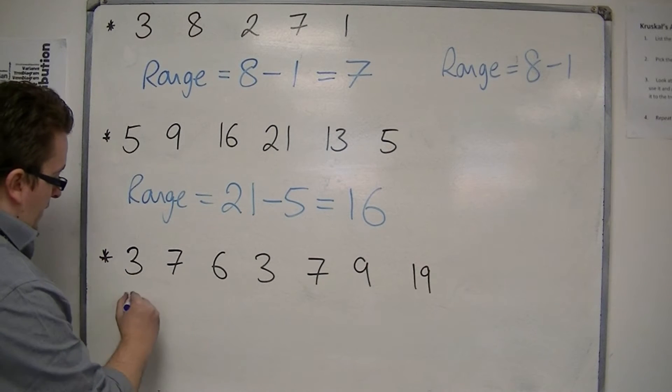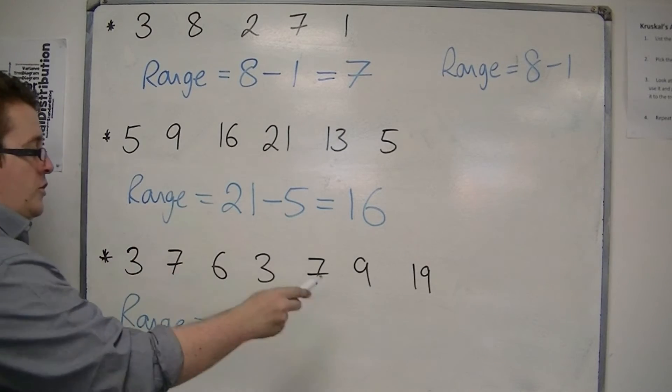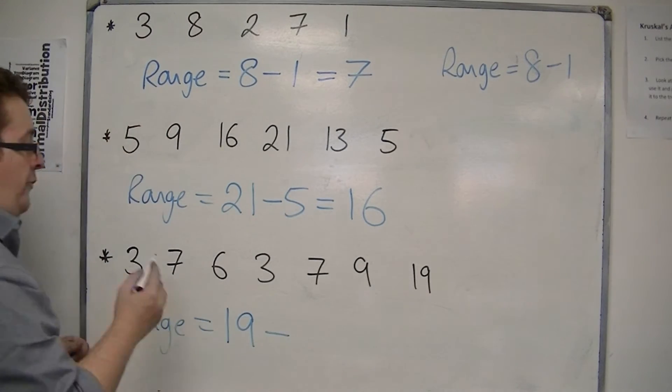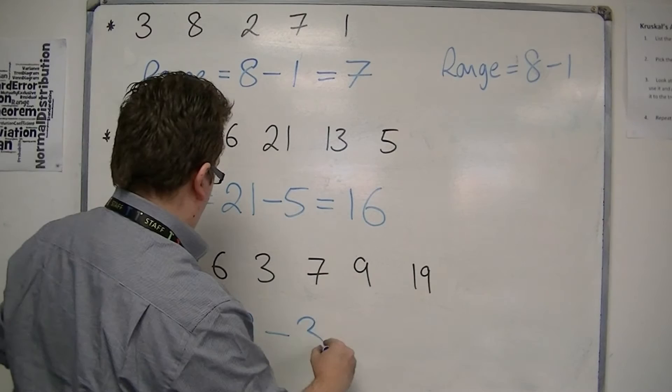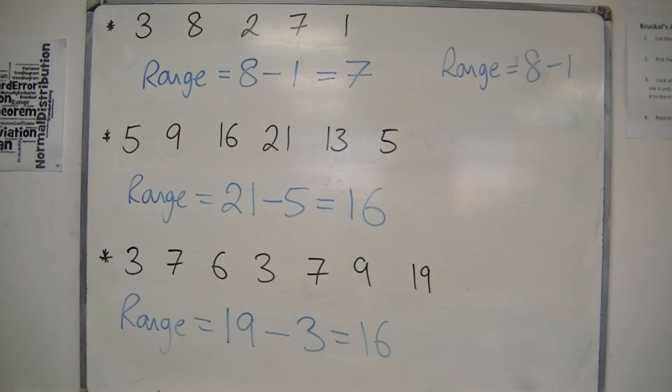For the third example, the largest number is 19, and the smallest is 3. Okay? And that would be 16.